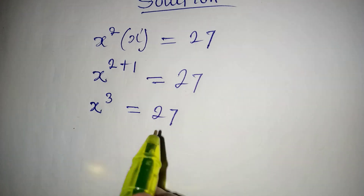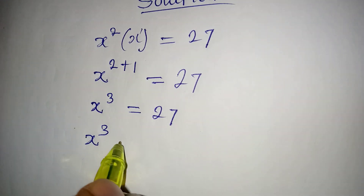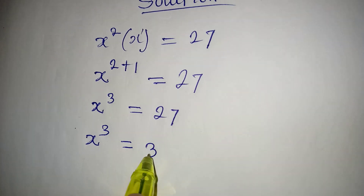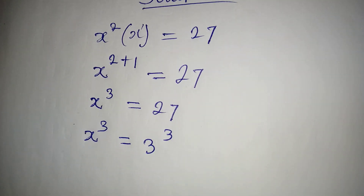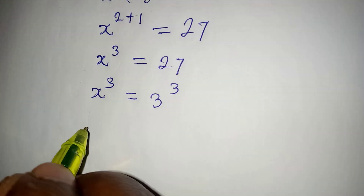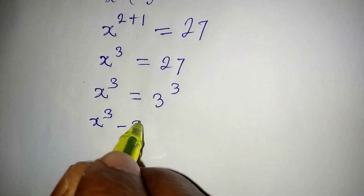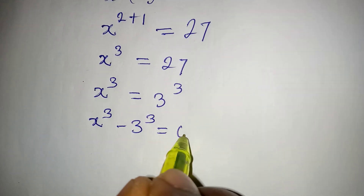So because of that, we're going to write x to the power of 3 to be equal to 3 to the power of 3, because that will give us 27. Now, bring everything to the same side: x to the power of 3 minus 3 to the power of 3 is equal to 0.